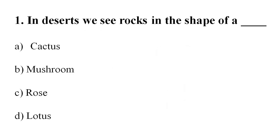Question 1: In deserts, we see rocks in the shape of a ___. Option A: Cactus. Option B: Mushroom. Option C: Rose. Option D: Lotus. Your correct answer is Option B, Mushroom.